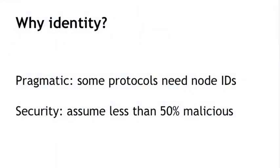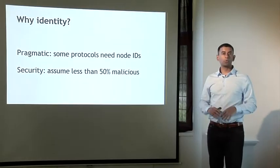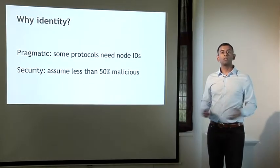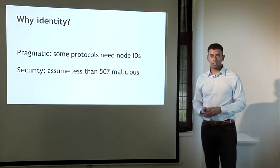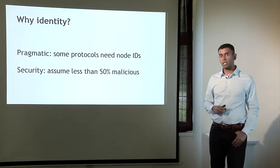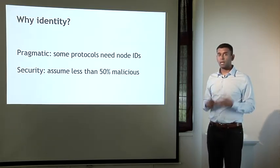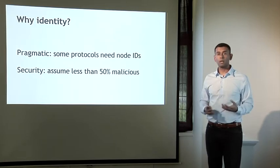One is a pragmatic reason: it would allow you to put into your protocol things like, 'the node with the lowest numerical ID should take some step.' If nodes are completely anonymous, that becomes harder to do. But a much more serious reason for nodes to have identities is for security, because if nodes were identified and it weren't trivial to create new node identities, then we could make assumptions like less than 50% of the nodes are malicious, and derive security properties out of that. So for both of these reasons, the consensus protocol in Bitcoin is a bit harder.